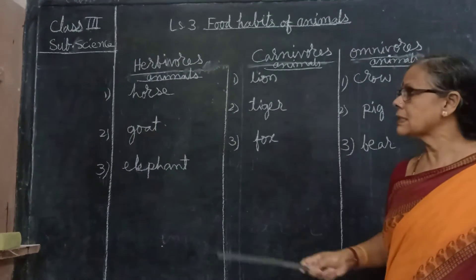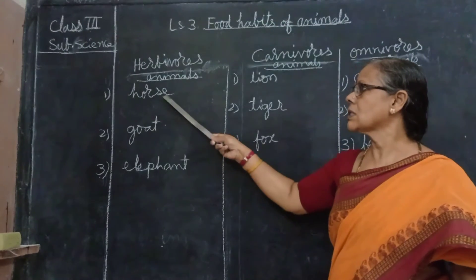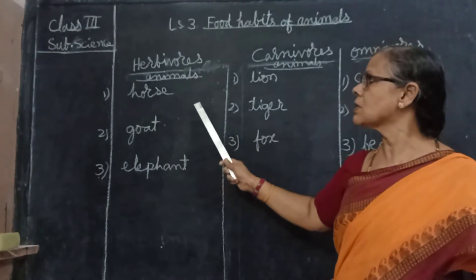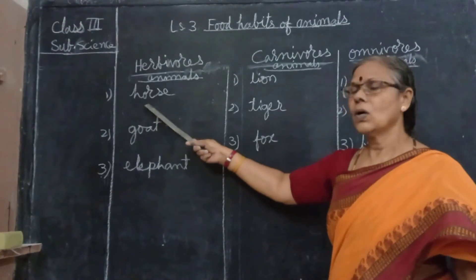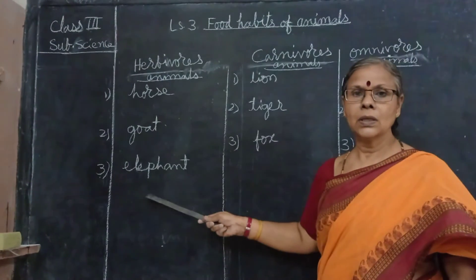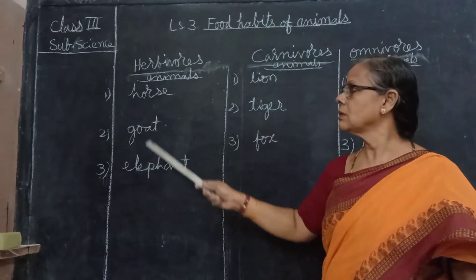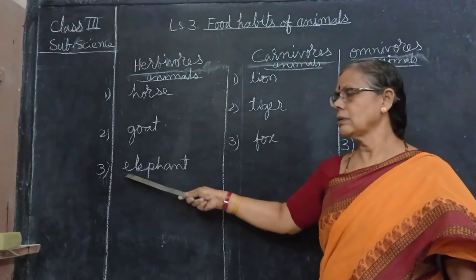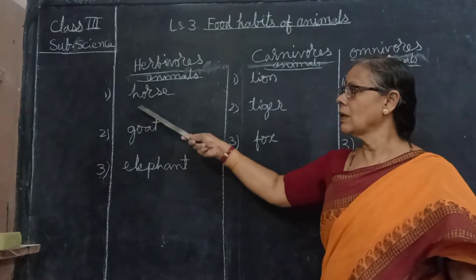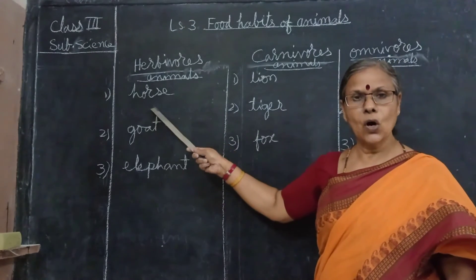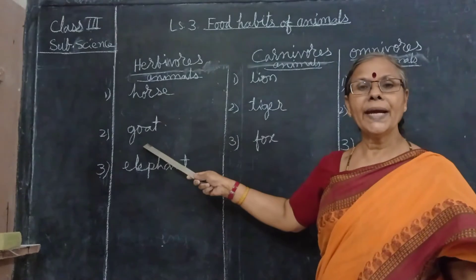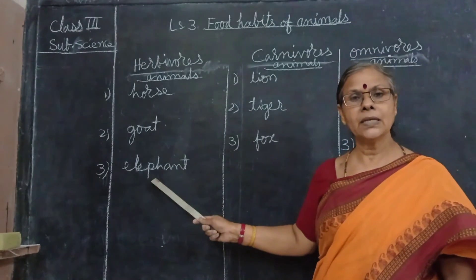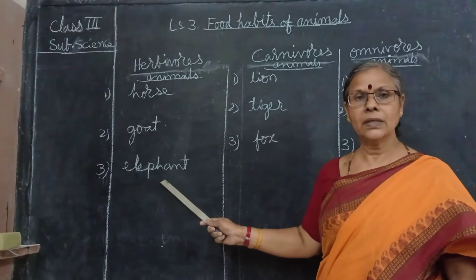So let us start. What are the animals coming under the herbivores? Horse — H-O-R-S-E. Goat — G-O-A-T. Elephant — E-L-E-P-H-A-N-T. Then carnivores animals: lion — L-I-O-N. Tiger — T-I-G-E-R. Fox — F-O-X.